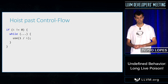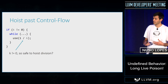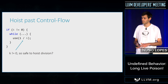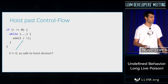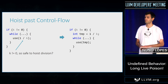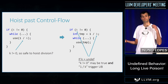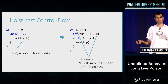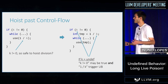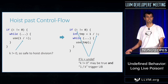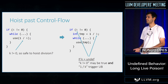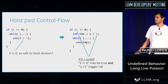Second problem: hoisting past control flow. We have one divided by k inside a loop, within an if condition that says k is non-zero. It seems reasonable to hoist this division out of the loop. But since each read of undef can return a different value, we can have this impossible case where k is non-zero and we divide by zero. This means it's impossible to hoist any division out of loops in LLVM right now. LLVM used to do this but now does not, because we can never basically prove it's safe to hoist divisions.